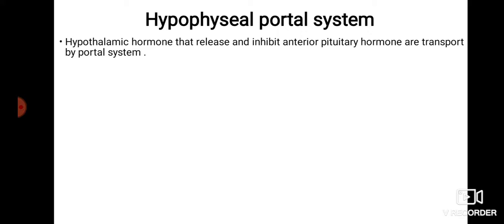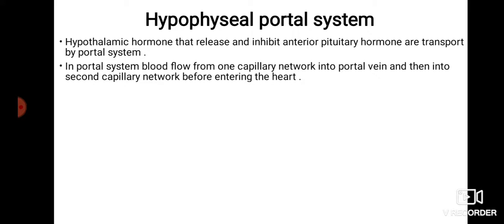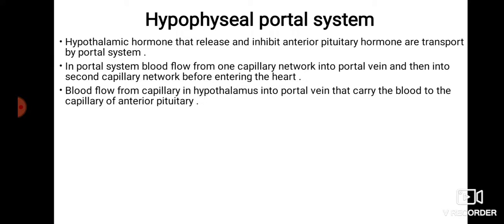The hypophyseal portal system: hypothalamic hormones that release or inhibit anterior pituitary hormones are transported by the portal system. In the portal system, blood flows from one capillary network into a portal vein, and then into a second capillary network before entering the heart. Blood flows from capillaries in the hypothalamus into the portal vein, which carries blood into the capillaries of the anterior pituitary.